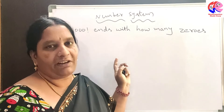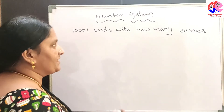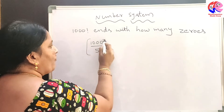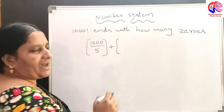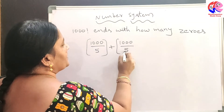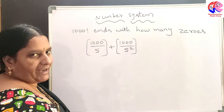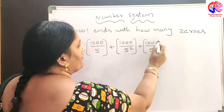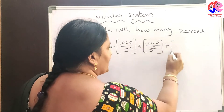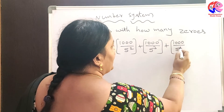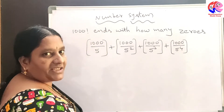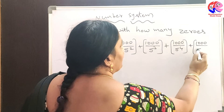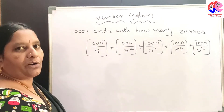To find the highest power of 5 in 1000 factorial, the procedure is: floor(1000/5) + floor(1000/5²) which is floor(1000/25) + floor(1000/5³) which is floor(1000/125) + floor(1000/5⁴) which is floor(1000/625) + floor(1000/5⁵) which is floor(1000/3125).